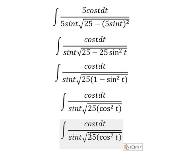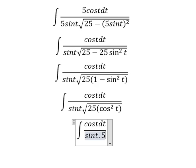The square root of 25 cosine t squared, we change for 5 cosine t.